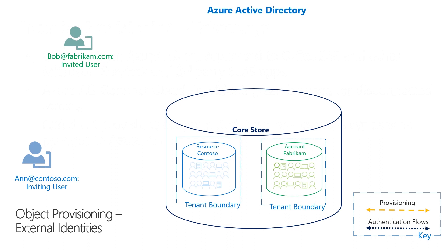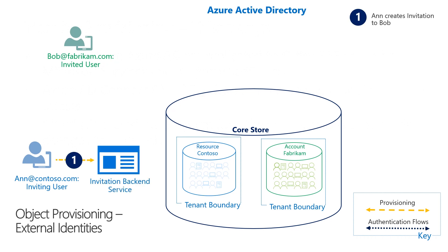Creating external users has two parts. Part one is invitation. The second part is what we call redemption. The invitation phase of the flow starts when Ann adds Bob to Microsoft Teams. Under the covers, Teams calls the invitation backend service to create an invite request for Bob. The invitation service validates that the request is not in the allow-denial list of tenants, whether the external user is already created, and other validations. When the validations pass, the service creates a user object in the resource tenant in step two. The user is then marked as a pending state until the flow is completed.